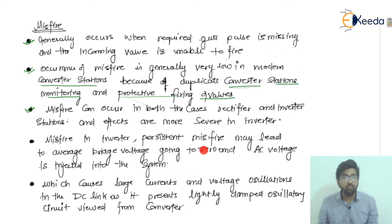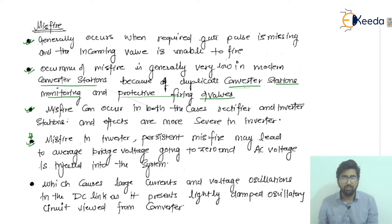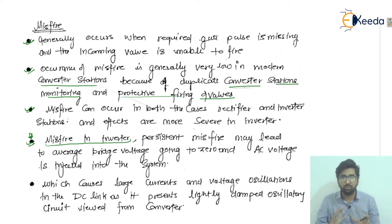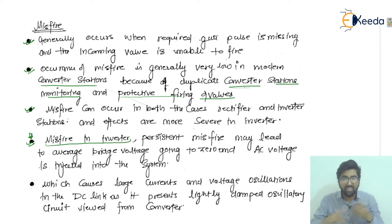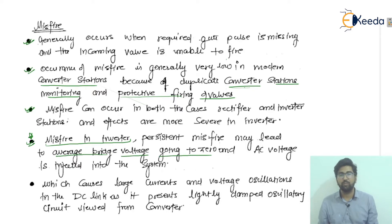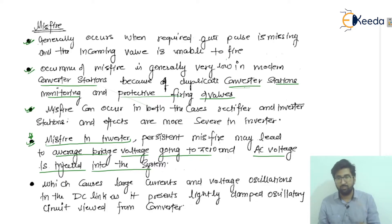If the misfire in the inverter persists or continues for some duration of time, it may lead to the average bridge voltage going to zero and AC voltage being injected into the DC system. This is an important point — if misfiring persists in the inverter, the already-conducting thyristors will conduct for more duration, the average bridge voltage goes to zero, and AC voltage is injected into the system.